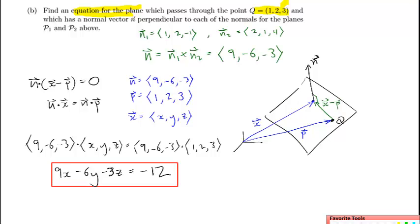This is the equation of the plane with a normal vector perpendicular to the two normal vectors from the previous part, passing through the given point (1, 2, 3). If you want to verify, you can check that plugging x=1, y=2, z=3 into the equation indeed satisfies it — and it does. That's the complete answer.